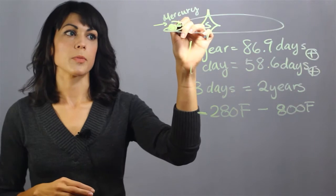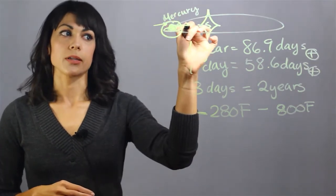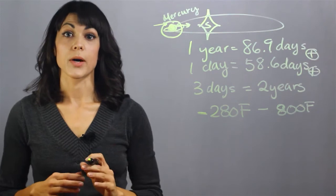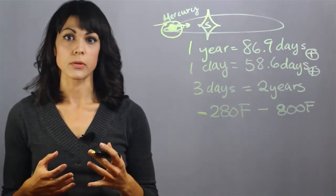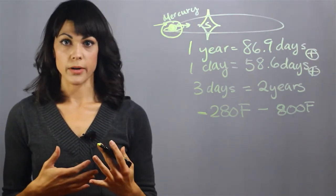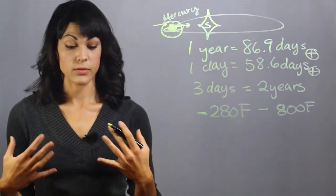Finding a stable orbit around Mercury without falling into the Sun will require an extraordinary amount of fuel, which is very difficult to carry and also costs a lot.